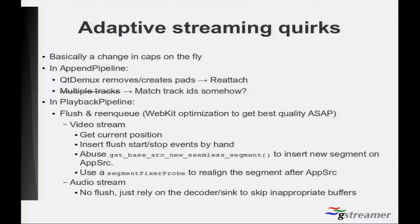We realize that the video stream and the audio stream both need to have compatible segments. The audio stream has the same segment it had before, because we never changed its pattern. The video stream has a new segment that is 100% compatible with the audio stream's segment. This makes the stream synchronizer element happy, so that we can still keep the buffers properly synchronized. For the audio stream, we don't perform a flush — instead, we inject new data even if it's repeated from a previous lower-quality version, and we have the decoder and the sink ignore that repeated data until the truly new data reaches the decoder and is then displayed.